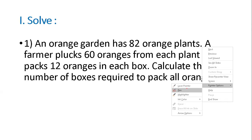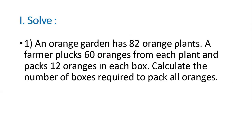First, we want to calculate total oranges from 82 orange plants. One orange plant gives 60 oranges, that means 82 into 60.